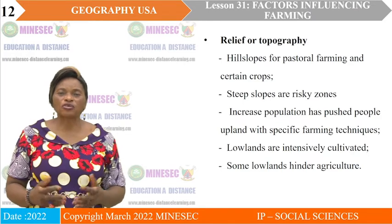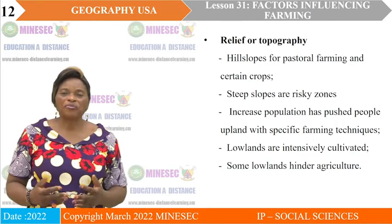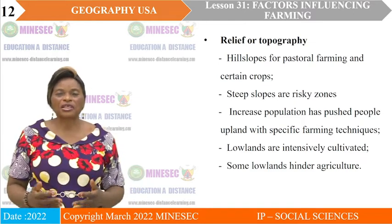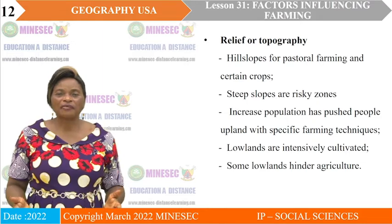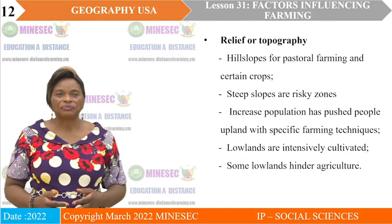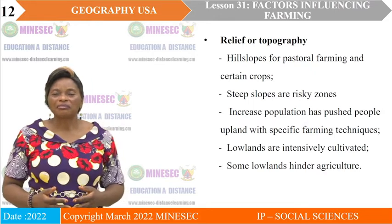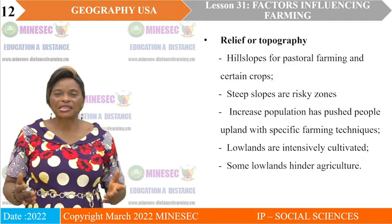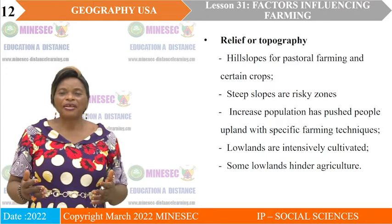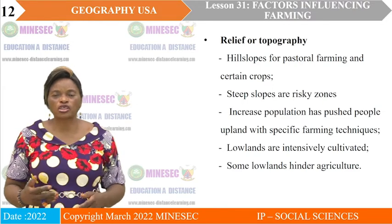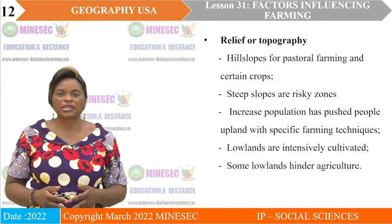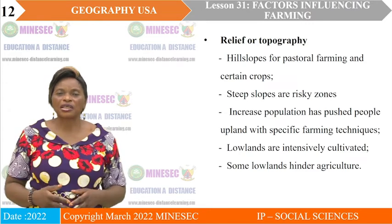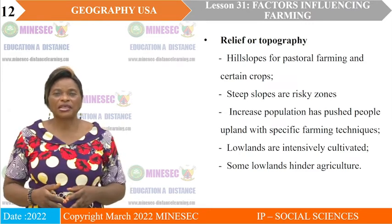Certain crops can also thrive on hill slopes — for example, Arabica coffee that thrives in the Western Highlands. Steep slopes are risky zones because they have very shallow soils; any regolith lying on the slope will be washed down to low-lying areas. Where there are steep slopes, normally farming cannot take place.